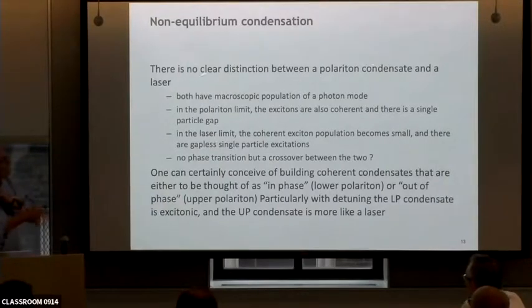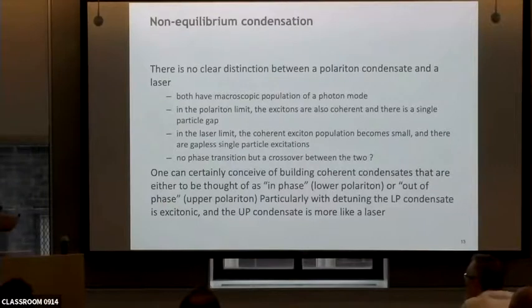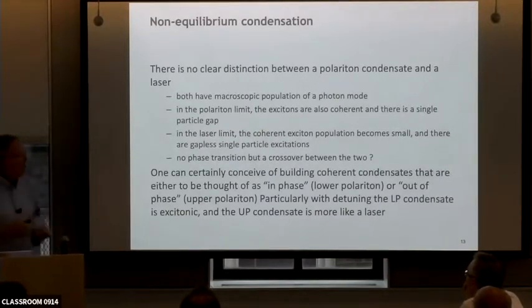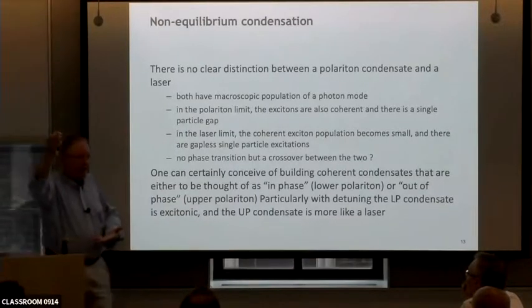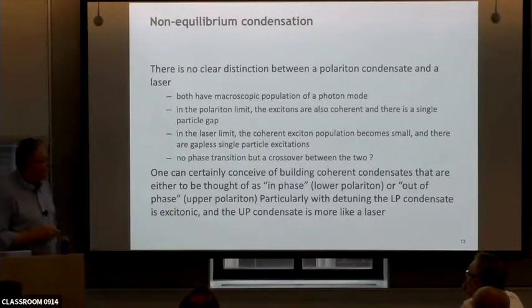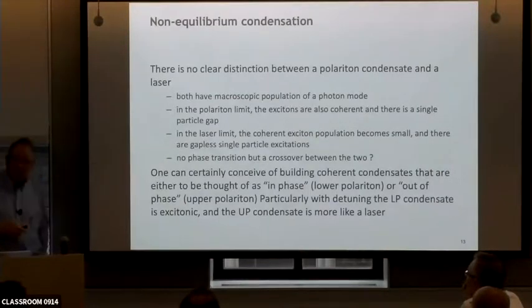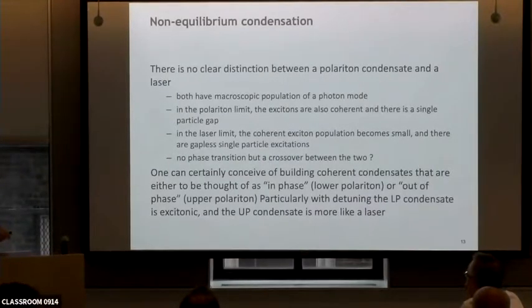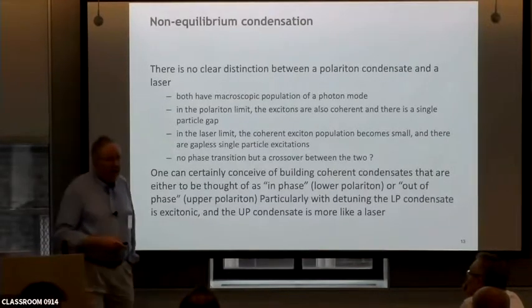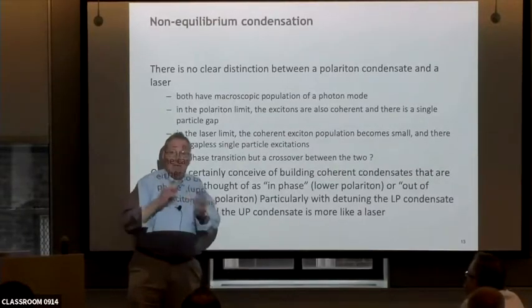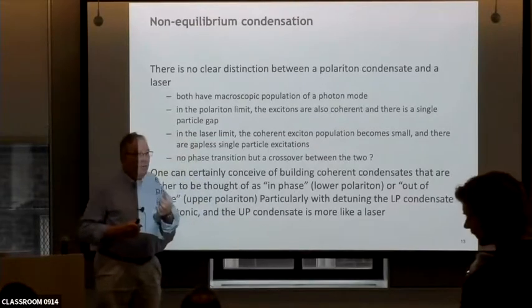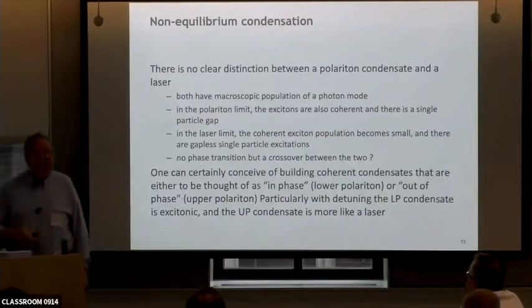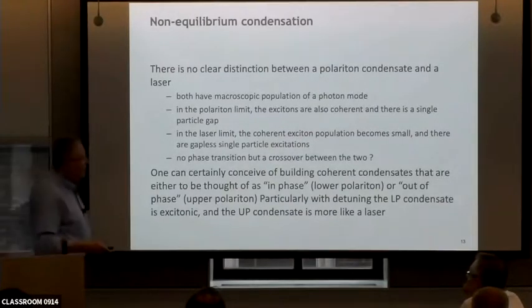All right. So there's no clear distinction between a polariton condensate and a photon laser. They both have macroscopic population of photon mode. The difference is that in one limit, the excitons are also coherent. They're following along with the coherent field. But in the laser limit, they're very weakly coherent. But there are so many photons in the system that I can still maintain that despite the fact that there's no imbalance. So, is there a phase transition between the two? And I'll point out right now and come back to filling this out, is one can certainly conceive of coherent condensates of different kinds. And the one I described to you in that experiment is a ferromagnetic condensate. They're all in phase. It turns out that the two particle one that Huygens found was actually an antiferromagnetic condensate. They come out of phase because the coupling is different. And so, there can be different kinds of in or out of phase condensates. And I want to suggest that that's one way of thinking about some of the phenomenon that we see.